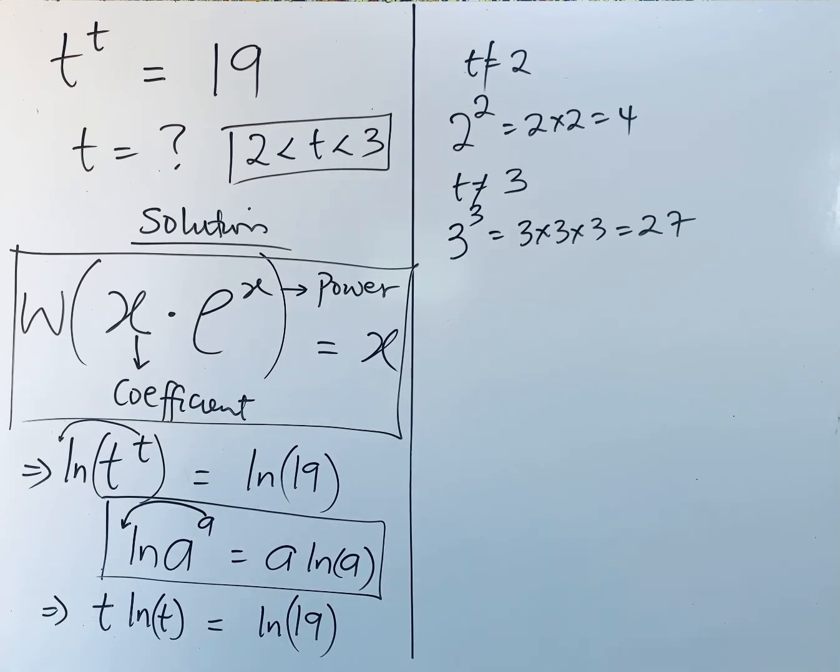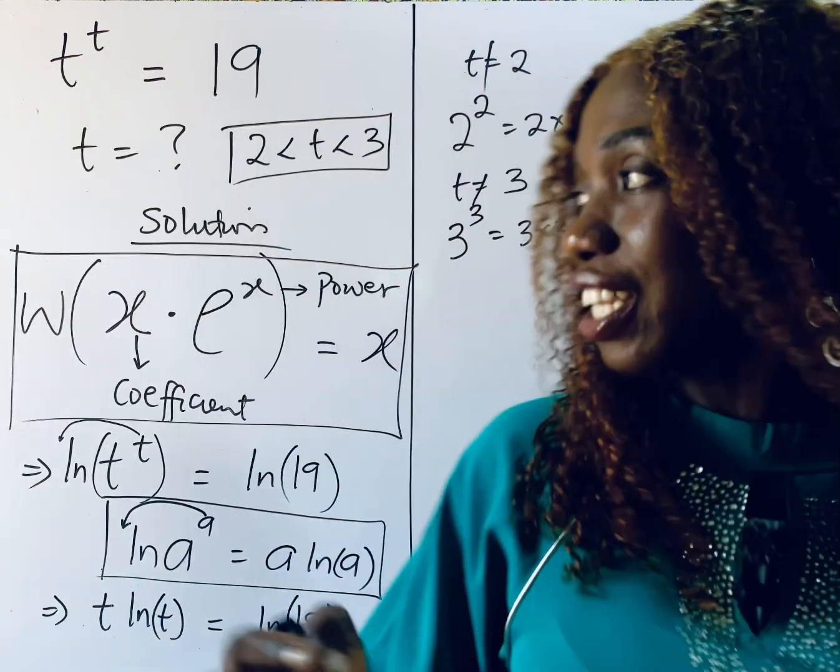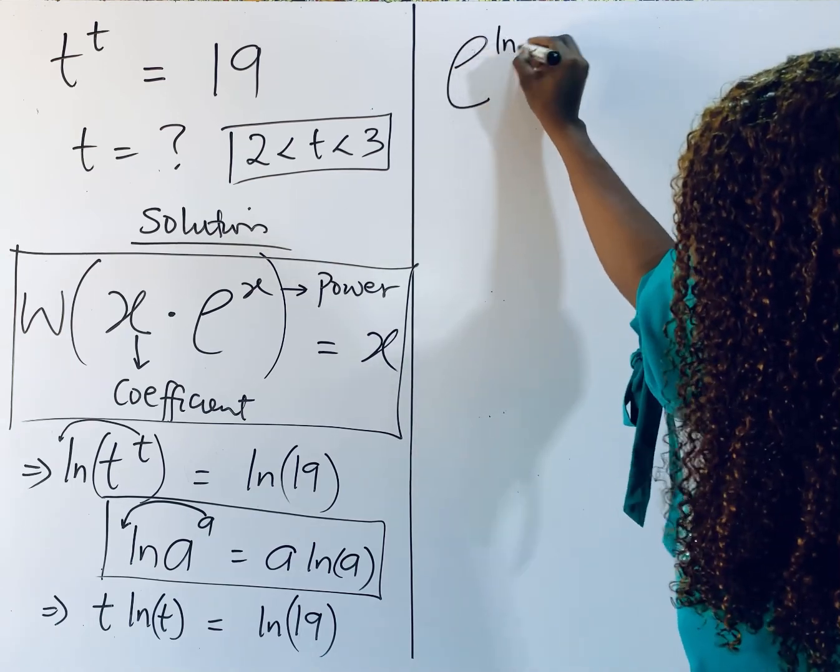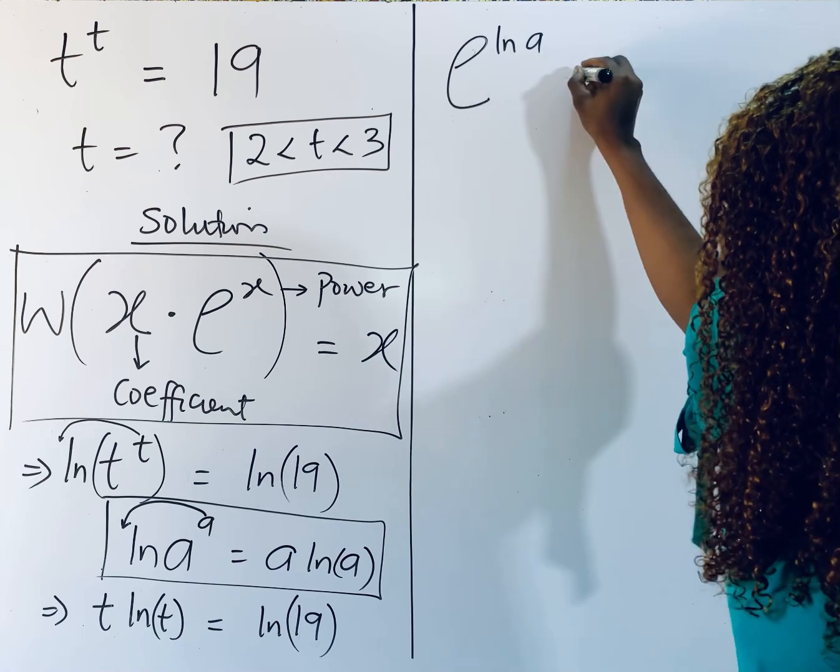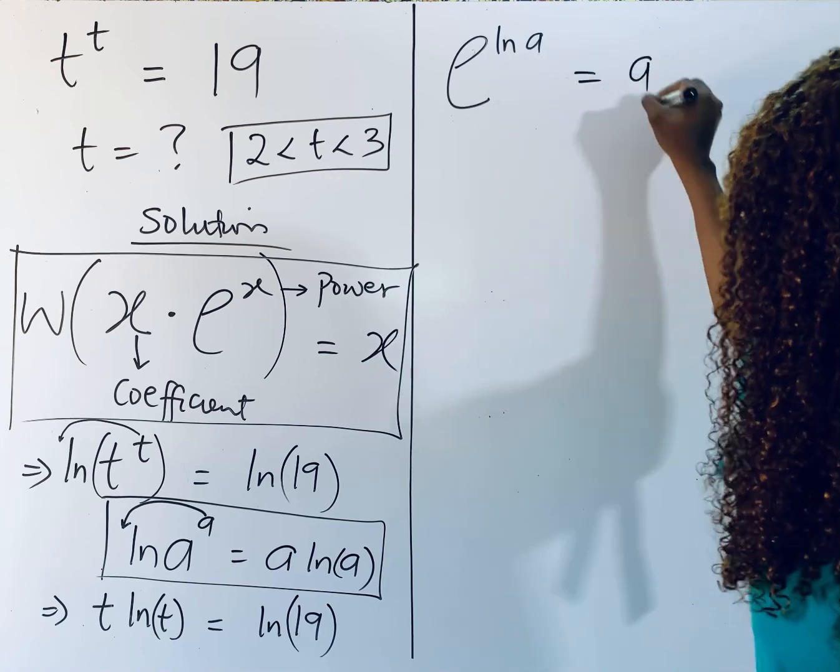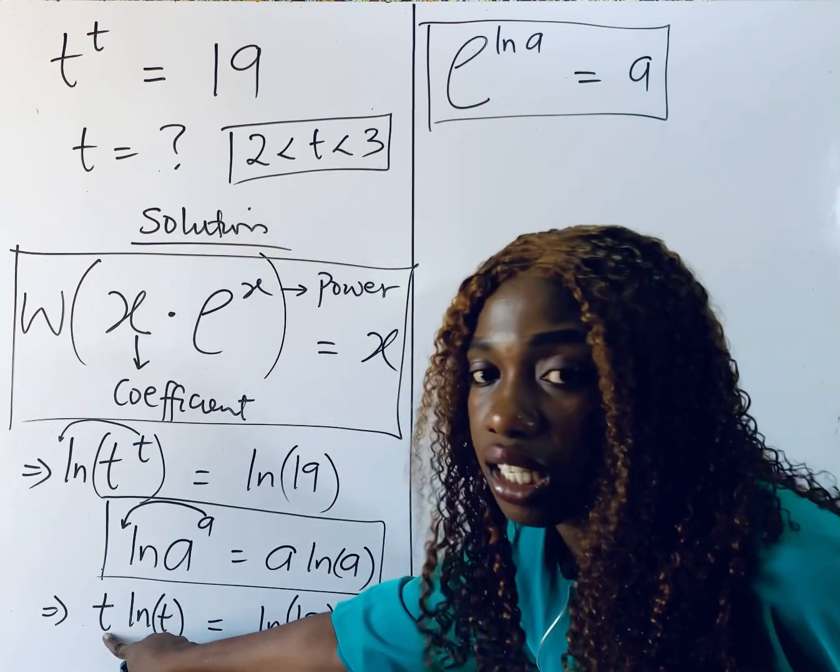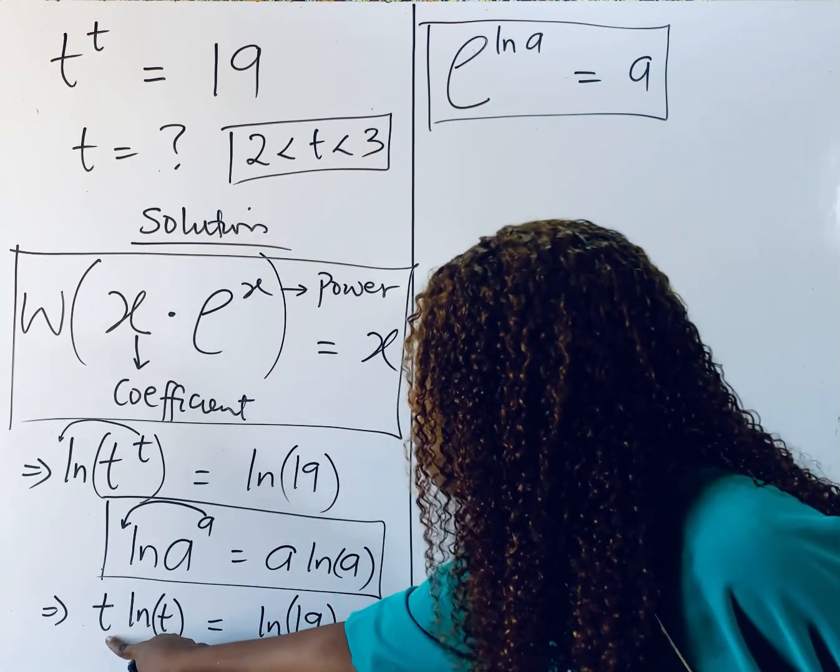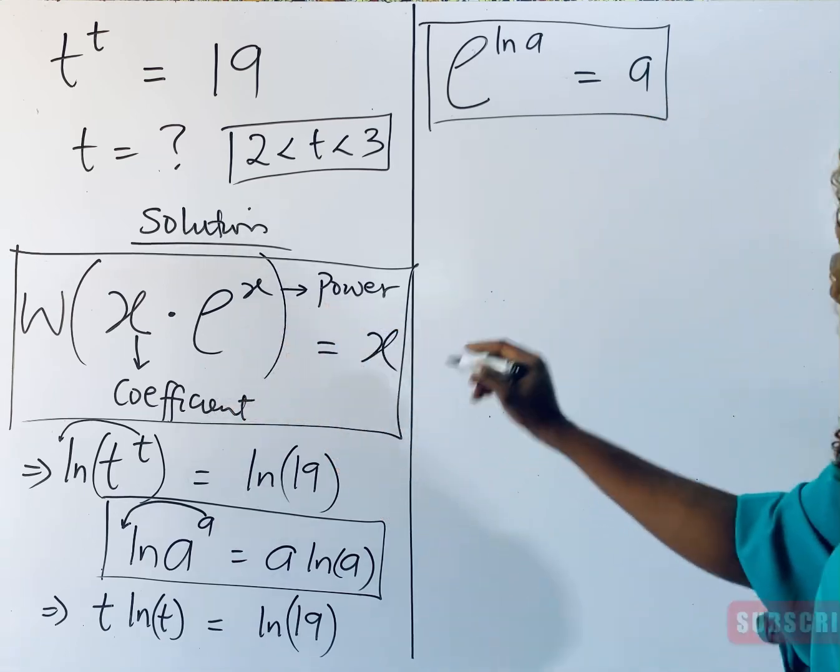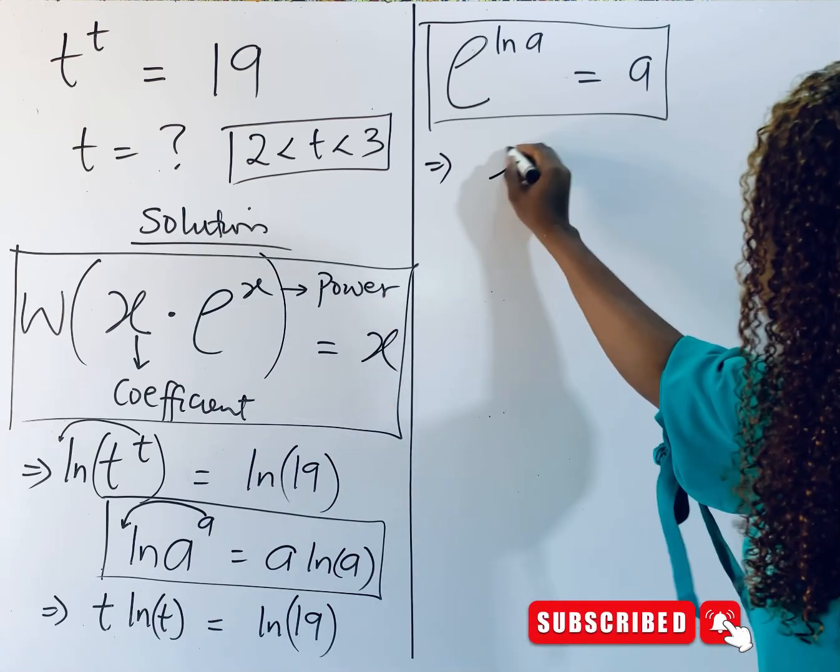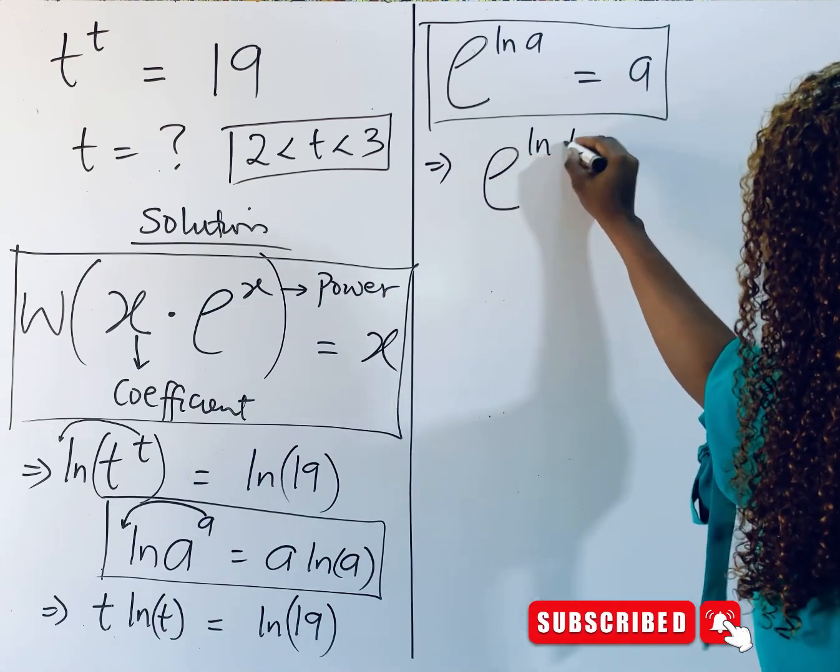So what do we do next? Our target is to find t. We need to recall that each time we have e to the power of ln of a, when it is raised to this, it returns you to this a. So if this is true, we can do something to this t. It is just to help us apply this rule. What do you do to it? This t is the same as e to the power of ln of t.